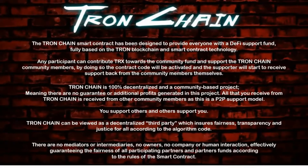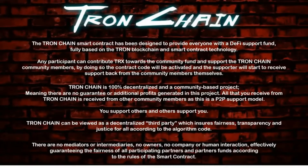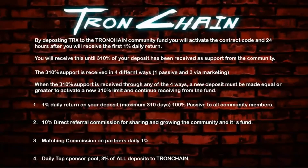All that you receive from TronChain is received from the other community members, as this is a peer-to-peer support model — you support others and others support you. TronChain can be viewed as a decentralized third party which ensures fairness, transparency, and justice for all according to the algorithm code. There are no intermediaries, no owners, no company, and no human interaction, effectively guaranteeing the fairness of all participating partners' funds according to the rules of the smart contract.